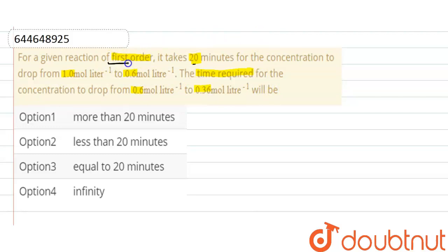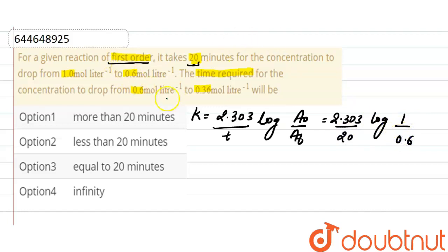Okay, so here the reaction is of first order. And as we know, the relation between rate constant and time is 2.303 divided by t log of initial concentration divided by final concentration. And here, the first data is: time required is 20 minutes, log of initial concentration is 1, and final concentration is 0.6.